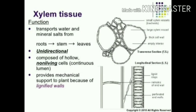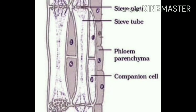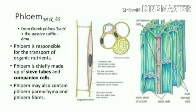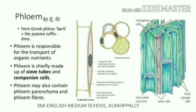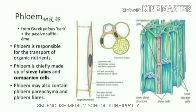The next example is phloem. Phloem is made up of four types of elements: sieve tubes, companion cells, phloem fibers, and phloem parenchyma. Sieve tubes are tubular cells with perforated walls. Unlike xylem, material in phloem can move in both directions — upward and downward. Phloem transports food from the leaves to other parts of the plant.